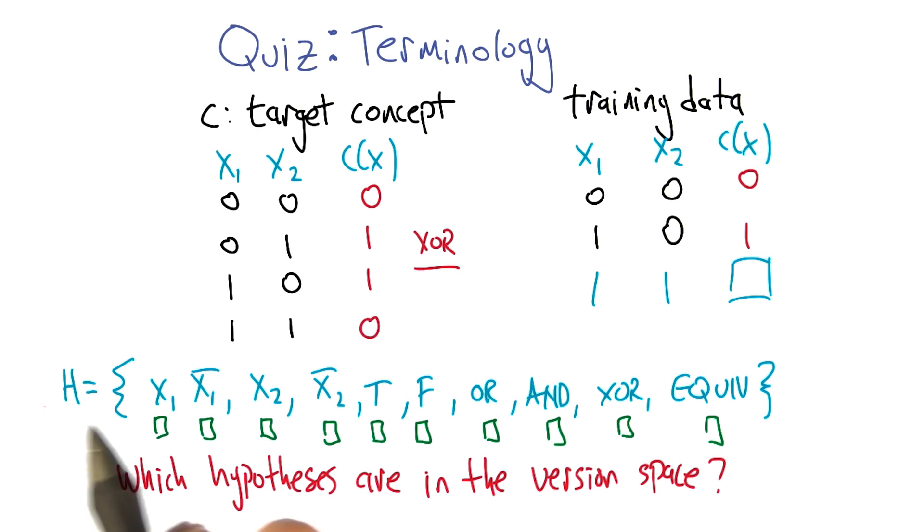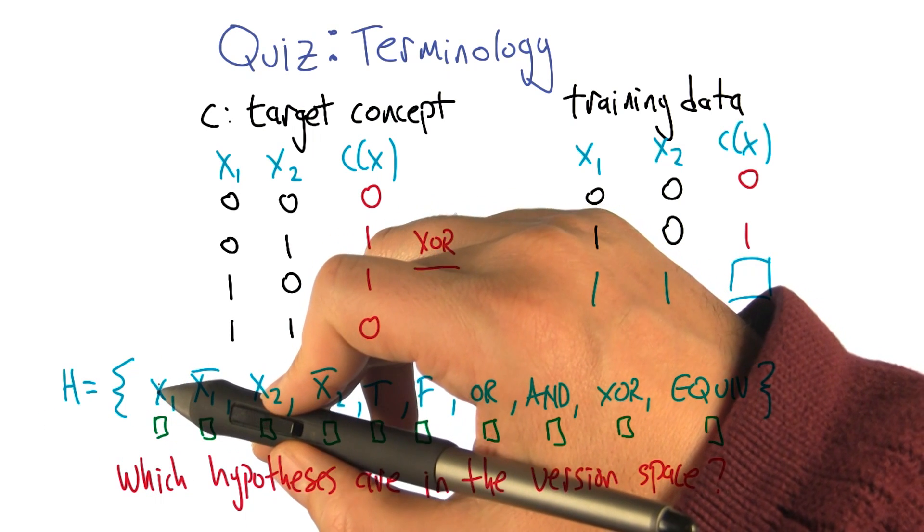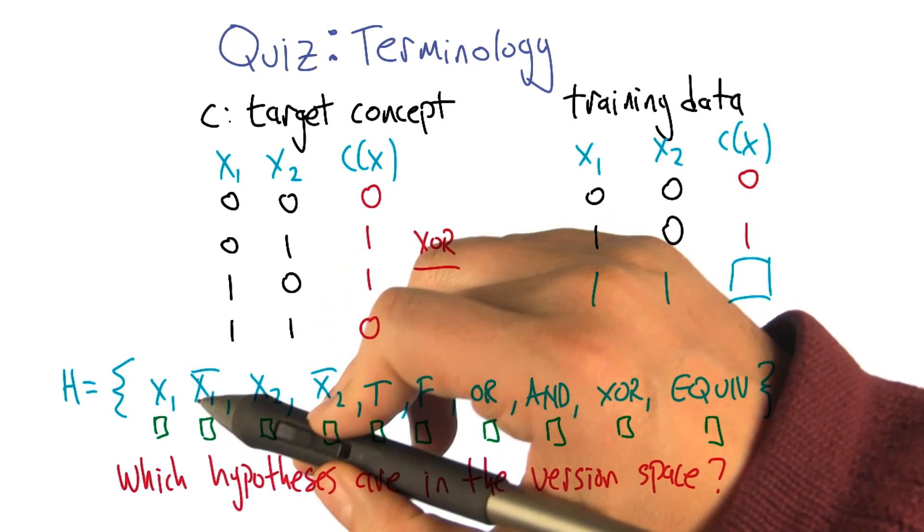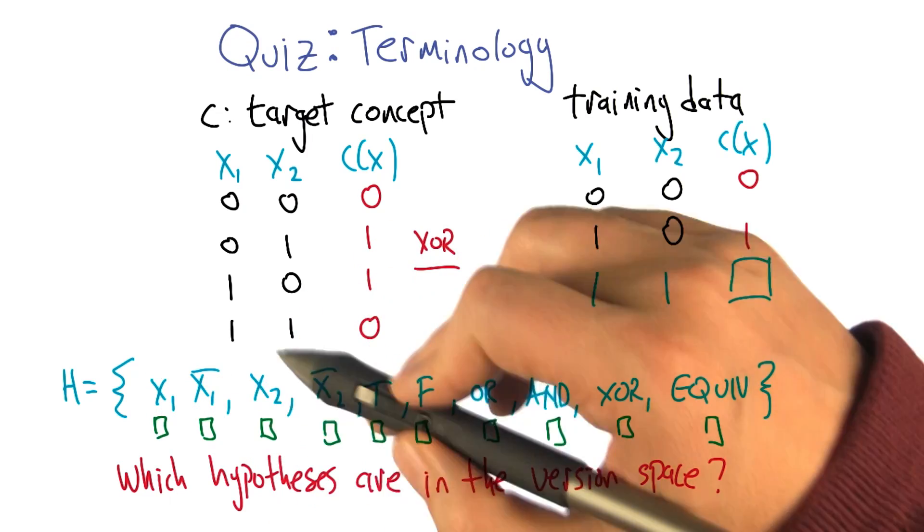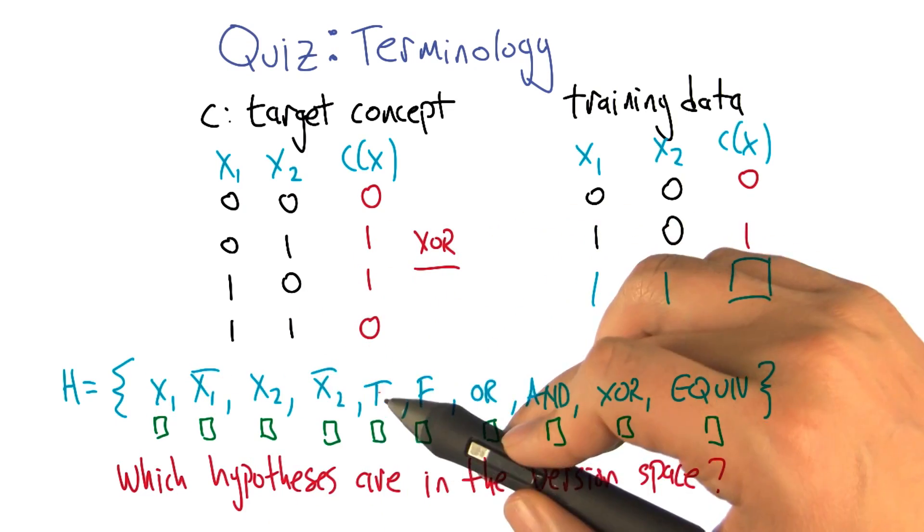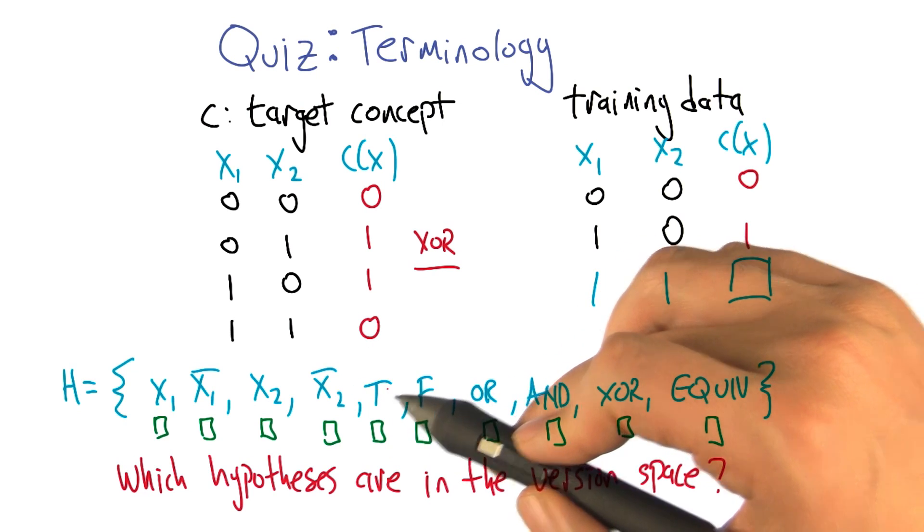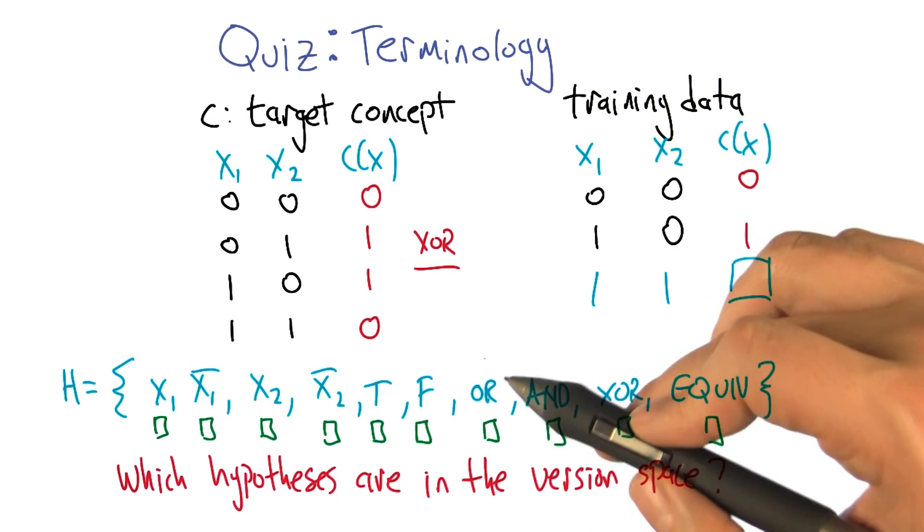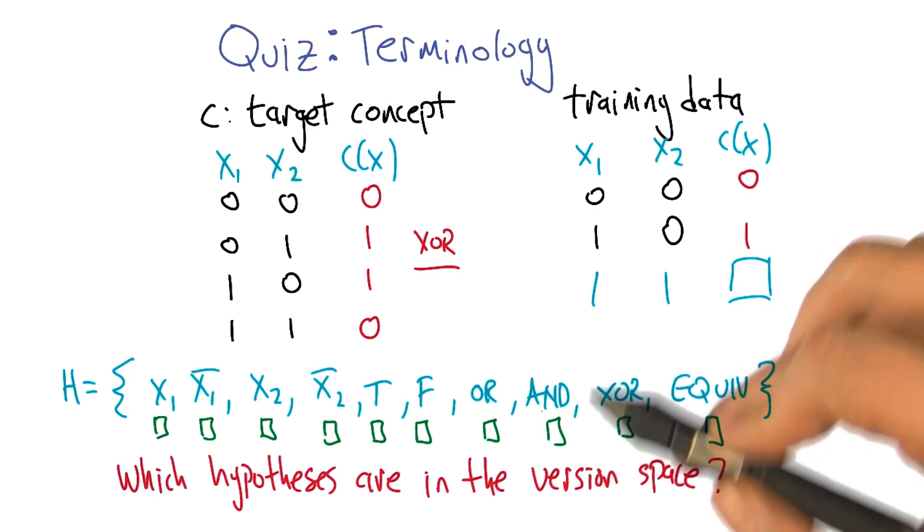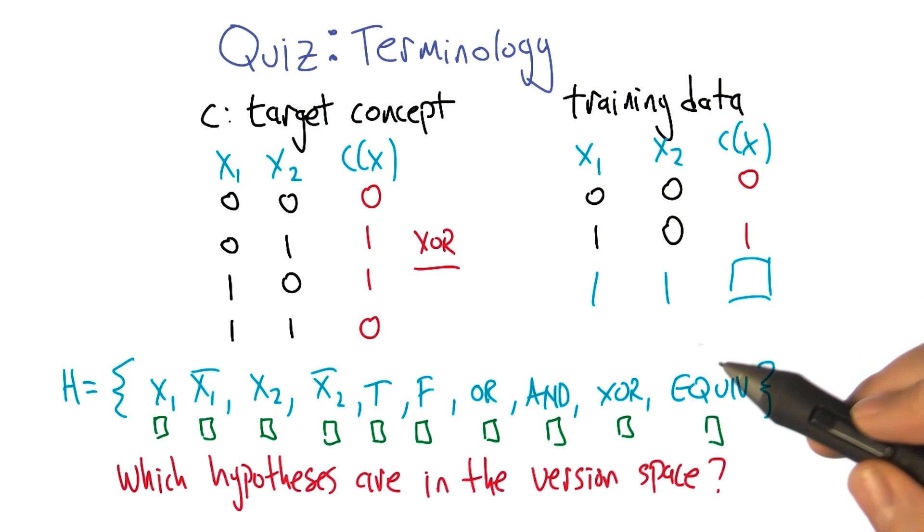Here's a set of hypothesis set. These are a set of functions that says the output could be just copy x1, negate x1, copy x2, negate x2, ignore the inputs and return true, ignore the inputs and return false, take the OR of the inputs, take the AND of the inputs, take the XOR of the inputs, and then return whether or not the inputs are equal to each other.